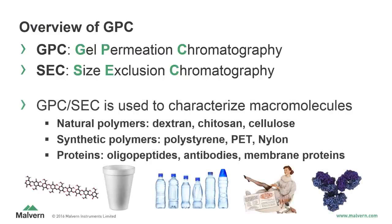GPC-SEC describes an analytical technique used to characterize macromolecules, providing data such as molecular weight, intrinsic viscosity, and hydrodynamic radius. These traits often affect the physical properties of the material and the behavior of the particular compound, and are of great interest to researchers, production plants, and manufacturers. Examples of materials frequently analyzed by GPC include natural polymers such as dextran, chitosan, and cellulose; synthetic polymers including polystyrene, polyethylene terephthalate, and nylon; and proteins such as oligopeptides, antibodies, and membrane proteins.